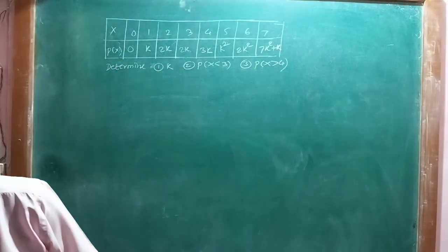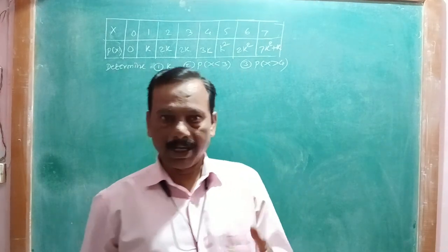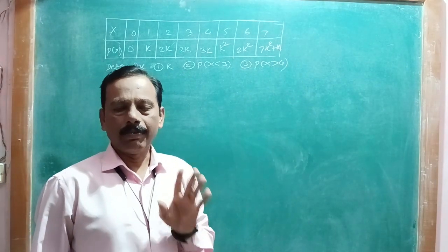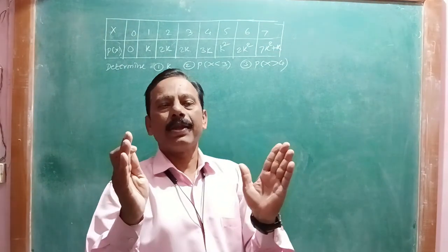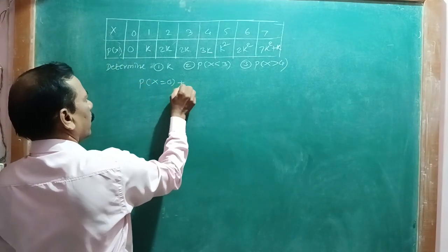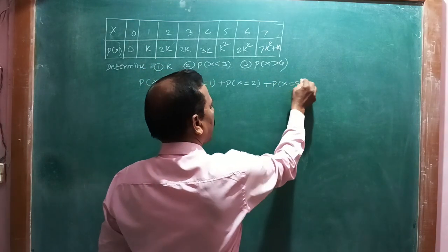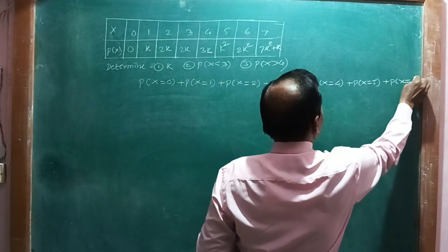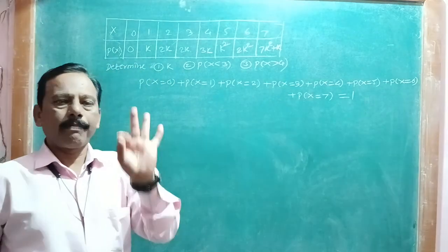The first question is to find k. The key property is that all probabilities must sum to 1. In a probability distribution, each probability lies between 0 and 1, and the sum of all probabilities equals 1. So we set P(x=0) + P(x=1) + P(x=2) + ... + P(x=7) = 1.